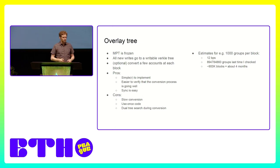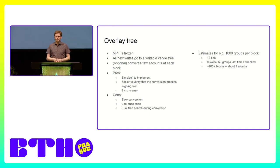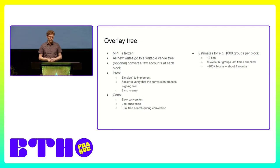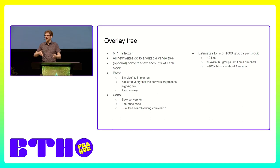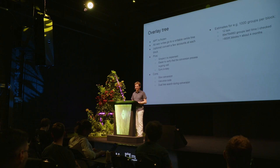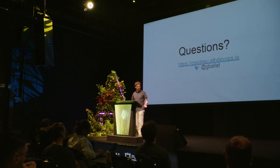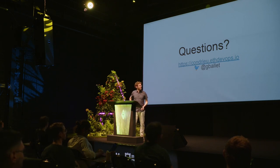One of the biggest drawbacks is that this overlay approach takes roughly four months to complete. But during those four months, at every block you can verify that everybody is synced, because you know exactly the status of their Verkle tree and their Merkle Patricia tree. The problem is you're in lock-step with the slowest machine on the network, since you can only transfer as many leaves per block as the smallest machine can support without coming out of sync.